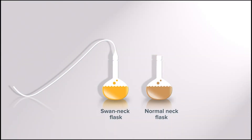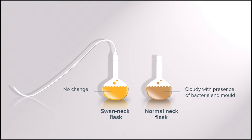Pasteur found that the broth in the normal neck flask became cloudy and was found to contain microbes such as bacteria and mould. The broth in the swan neck flask did not change, as particles in the air were prevented from landing on the broth due to the shape of the flask neck. This showed that microbes don't appear due to spontaneous generation. Instead, they entered the flask with the air on dust and other particles and multiplied in the broth.